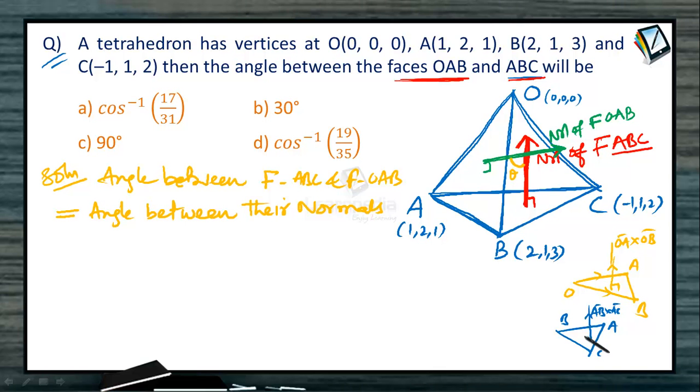Let us find out these two vectors and find the angle between them. That implies OA cross OB equals i, j, k and OA is (1,2,1) and OB is (2,1,3). Then the vector OA cross OB, this vector equals 5i minus j minus 3k.